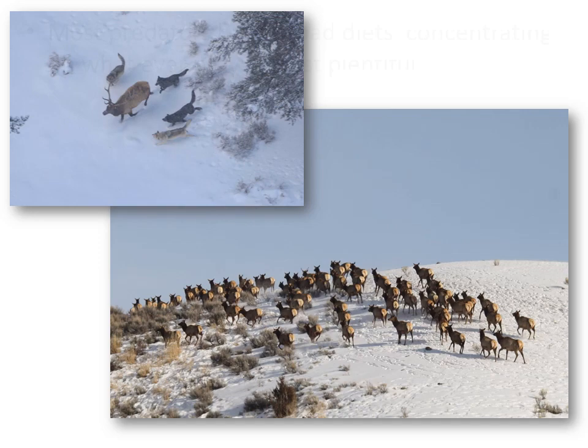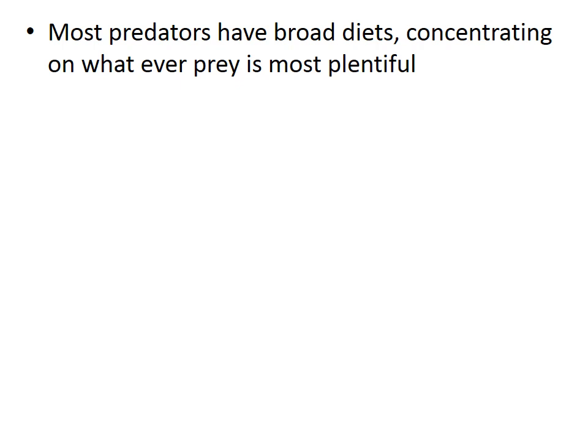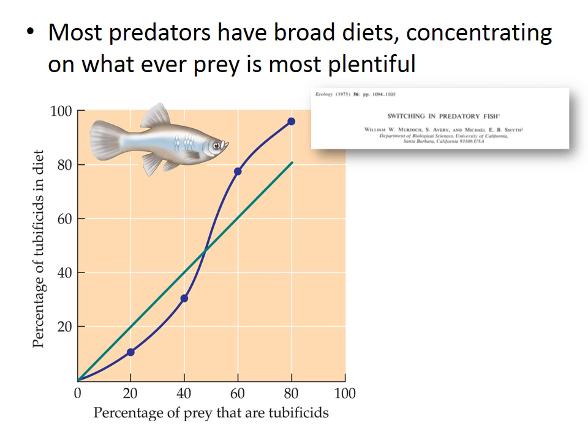Most predators will eat prey in relation to their availability, concentrating on whatever is most available and resulting in a relatively broad diet. Having a broad diet can be especially beneficial when prey availability frequently changes or is unpredictable.